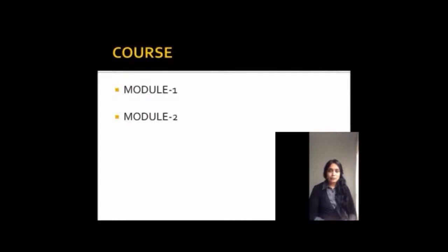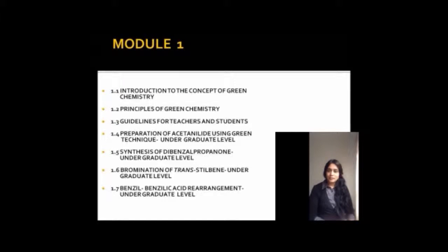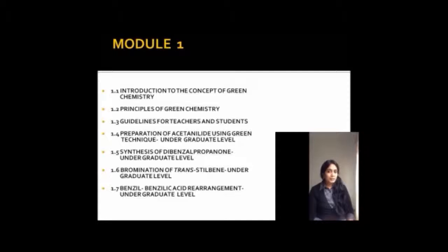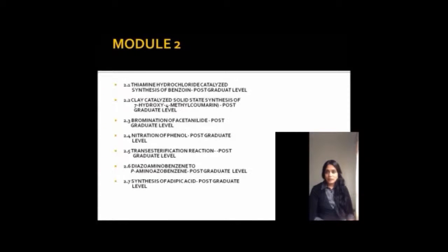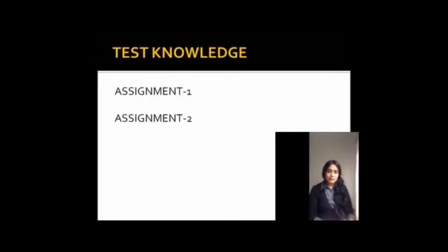This course is divided into two modules. Each module is again divided into seven topics each. In the first module, the learner will be learning about what is Green Chemistry, what are the principles of Green Chemistry, what are the applications of Green Chemistry, and also the guidelines for the teachers and students working in the greener roots, as well as the framework experiments for the undergraduate level students. In module two, the learner will be learning about the postgraduate level experiments that can be performed in the laboratory scale.